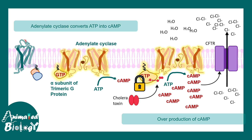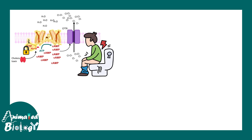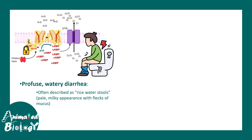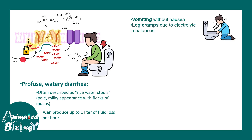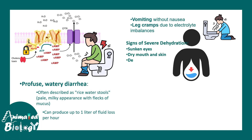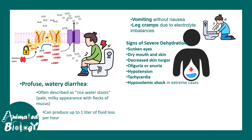Profuse watery diarrhea, often described as rice-water stool, is the characteristic finding of cholera. This pale milky stool has flecks of mucus, and one can literally produce up to one liter of fluid loss per hour. Alongside that there is vomiting without nausea, leg cramps due to severe dehydration and electrolyte imbalances, sunken eyes, dry mouth, hypotension, and tachycardia.